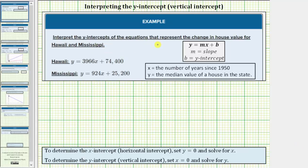We're asked to interpret the y-intercepts of the equations that represent the change in house value for Hawaii and Mississippi. For both equations, x equals the number of years since 1950, and y equals the median value of a house in the given state.